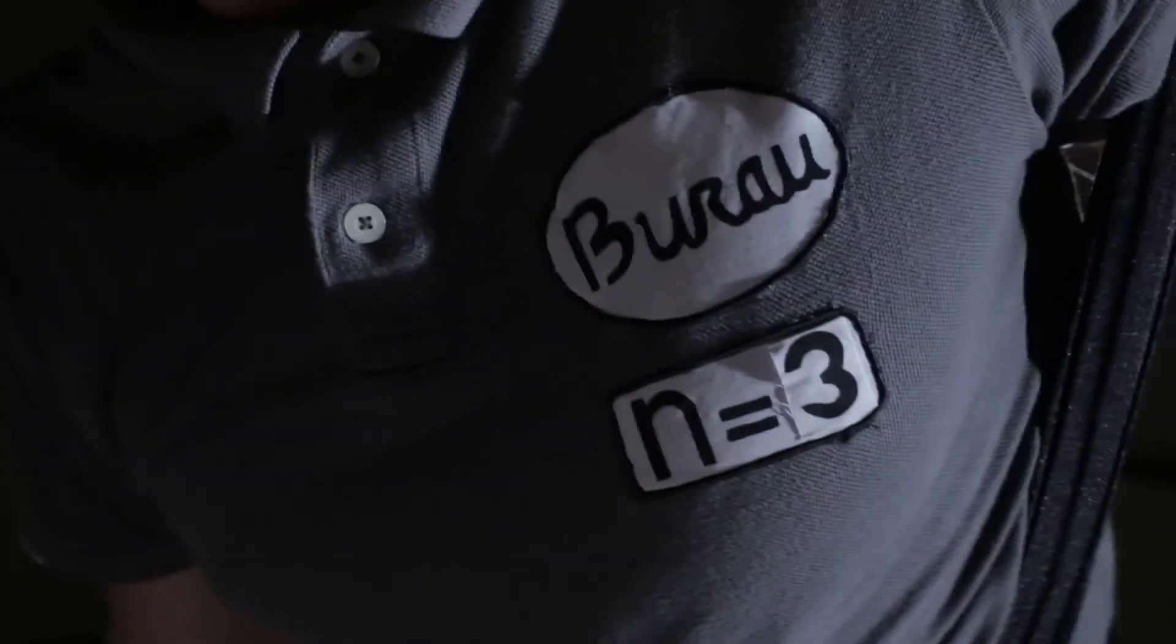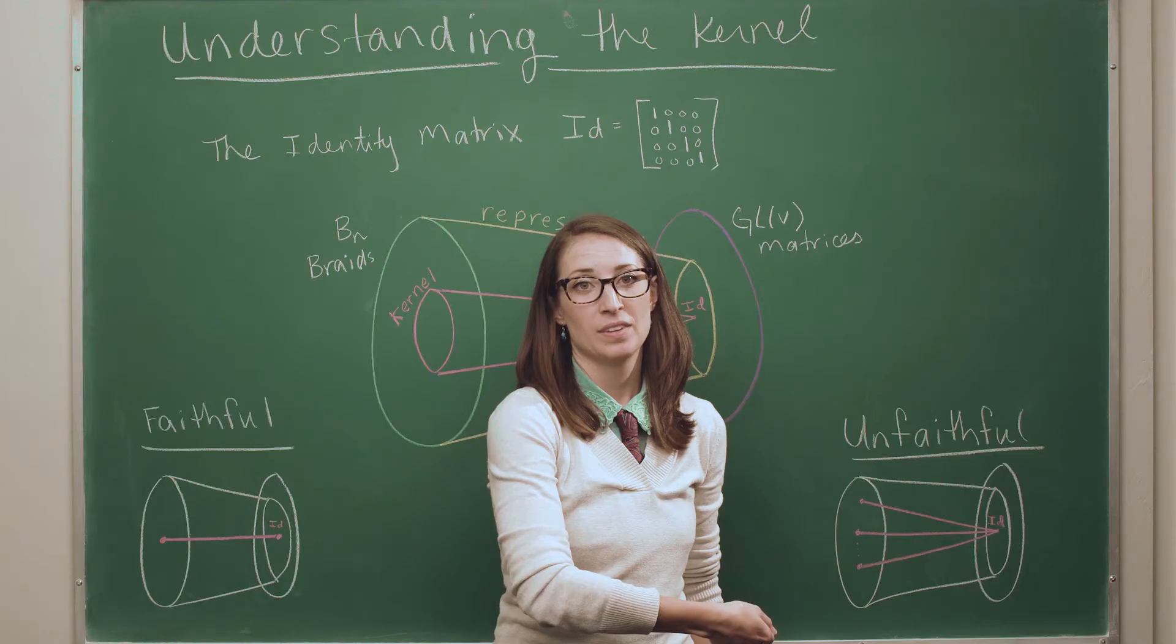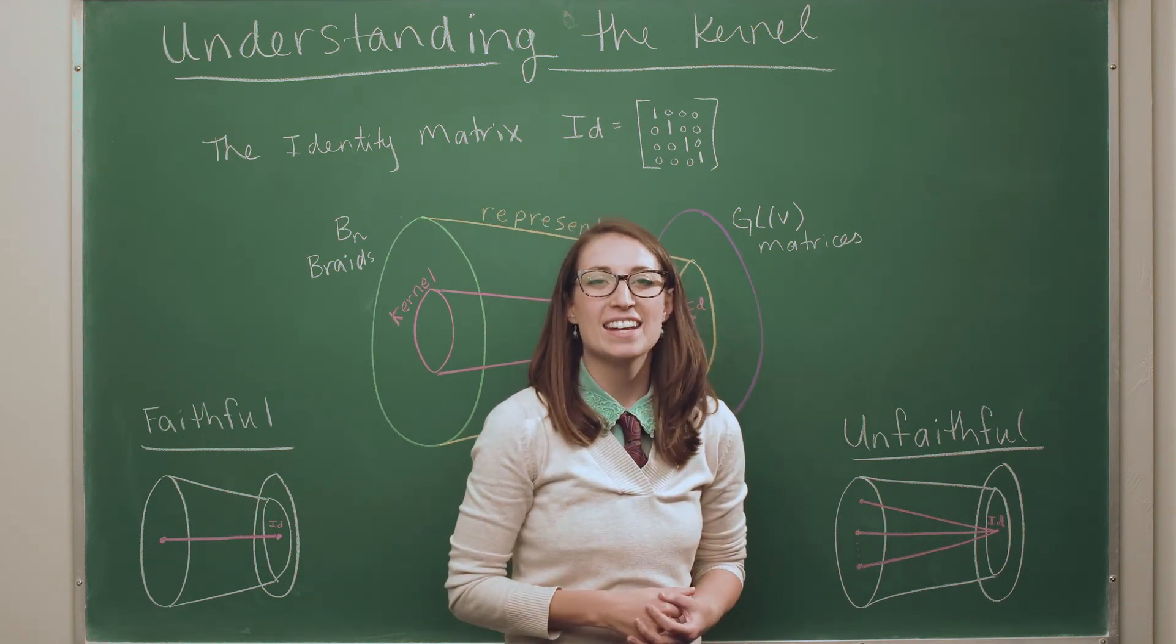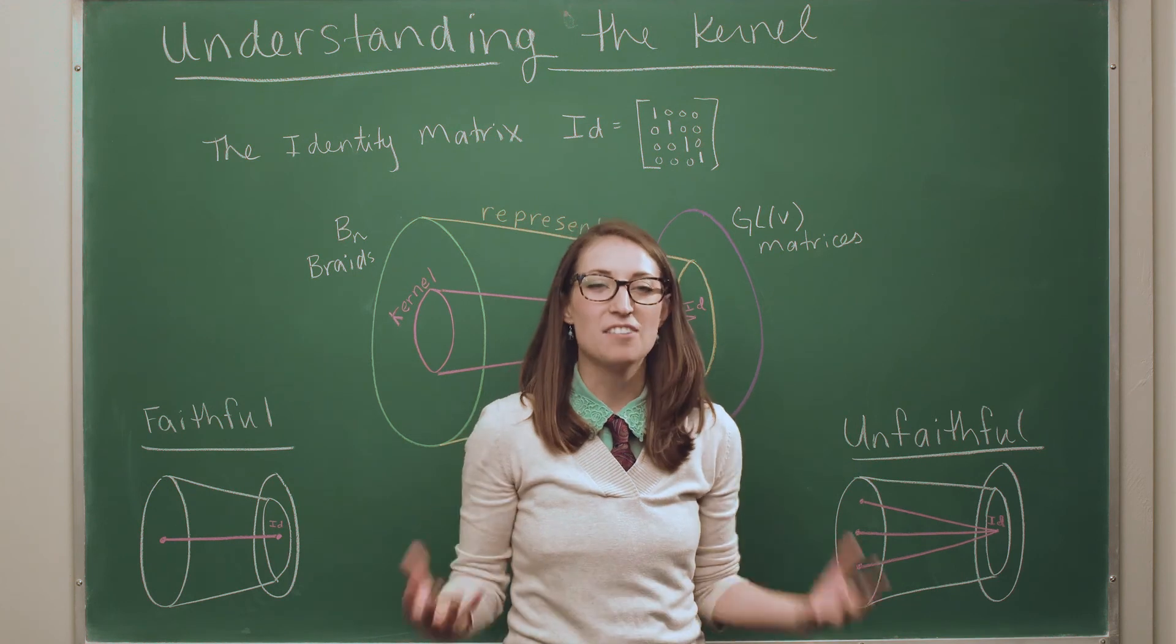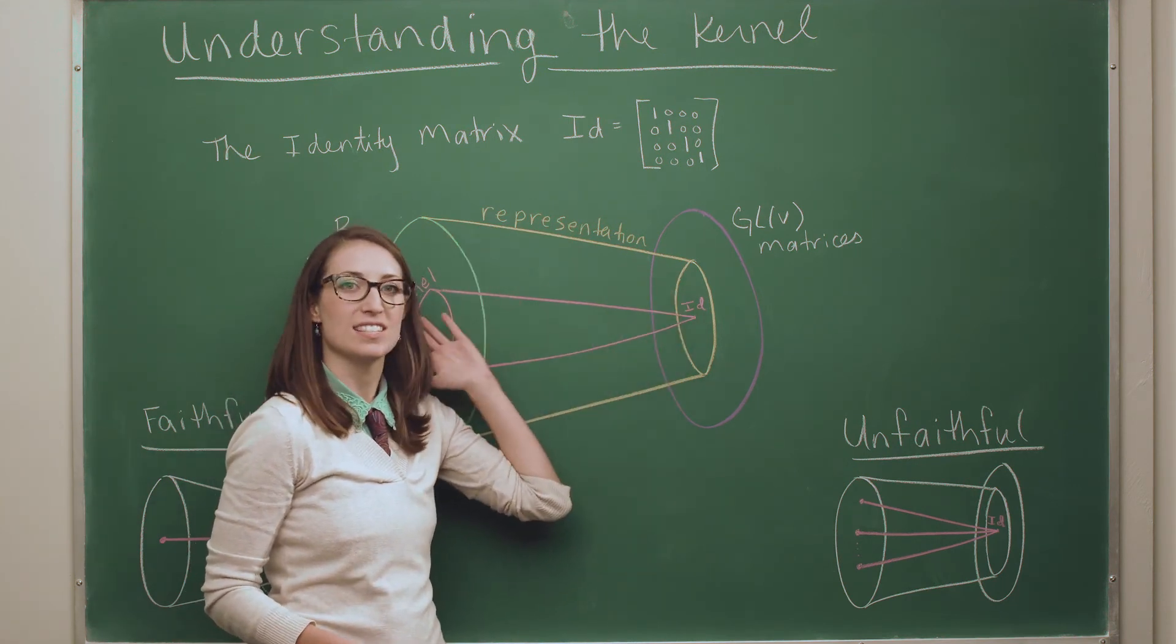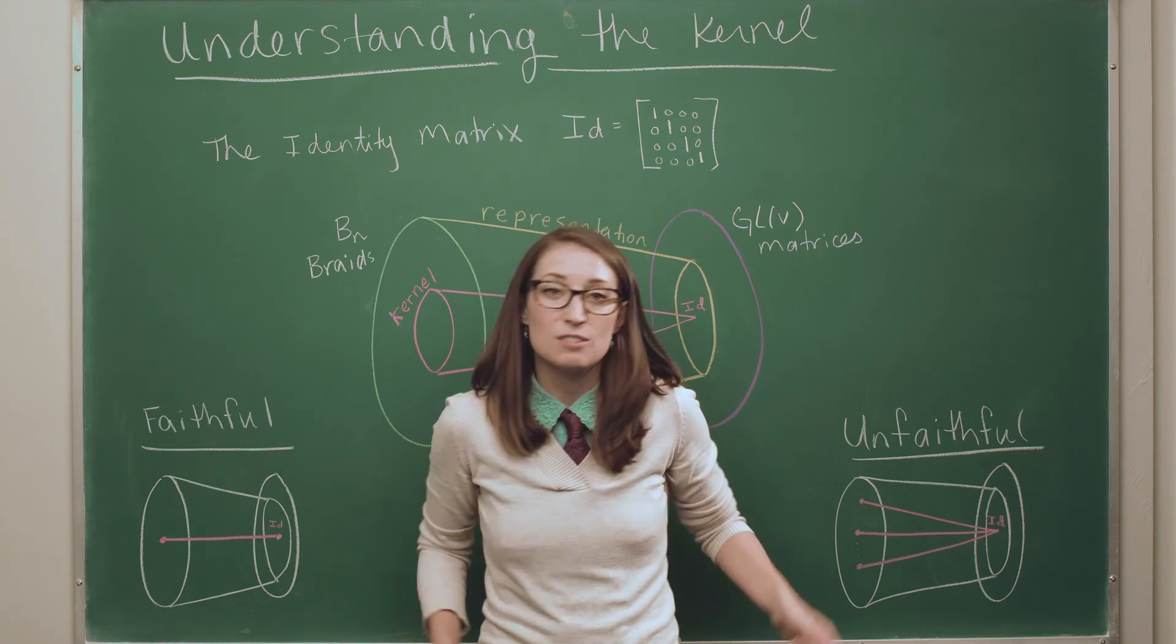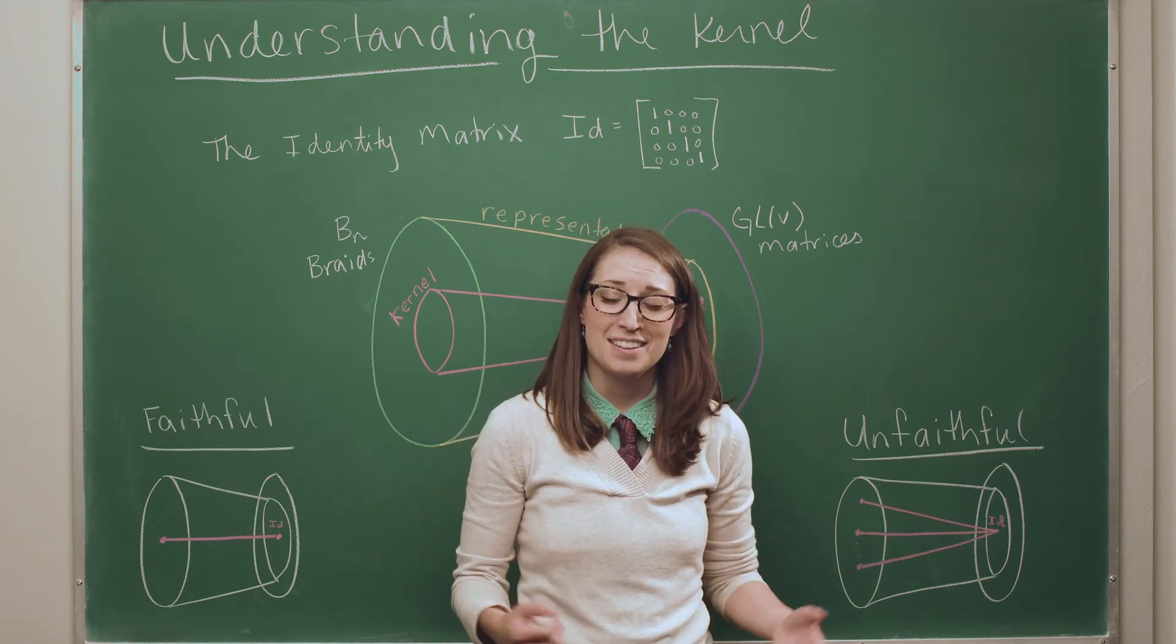The second thing I want to point out is there's a point where the kernel rips off a name tag and changes a three to a four. What's happening there is she's changing the number of strands that the braids have. She's changing from three strands to four strands. And that is related to an open problem in mathematics about the Burau representation. And this is sort of the foundation of what my research is built off of. So the Burau representation is one type of translation process that we've been describing. And when you take the braid group on four strands, we don't know whether the Burau representation is faithful or unfaithful. Mathematicians have been trying to figure this out for a very long time and they just can't do it. And that's what I'm working on.